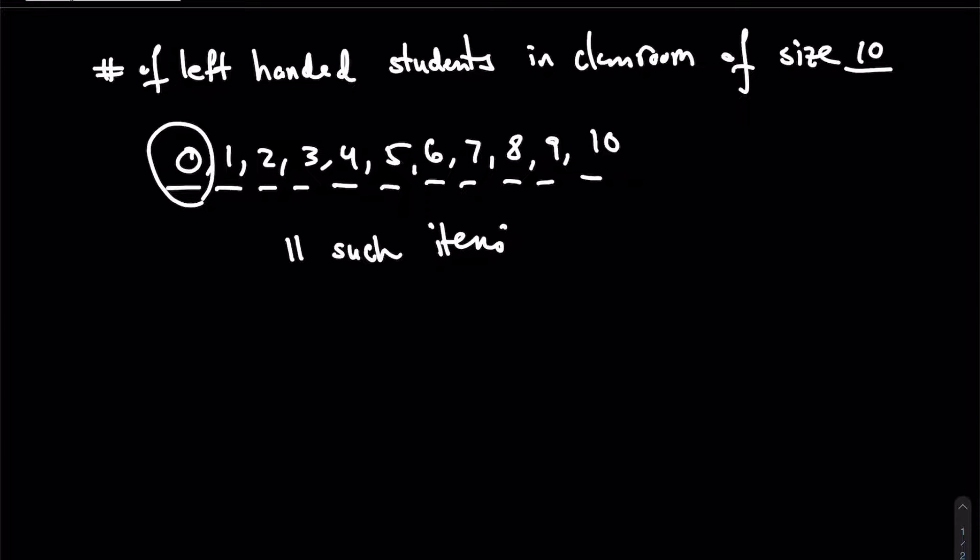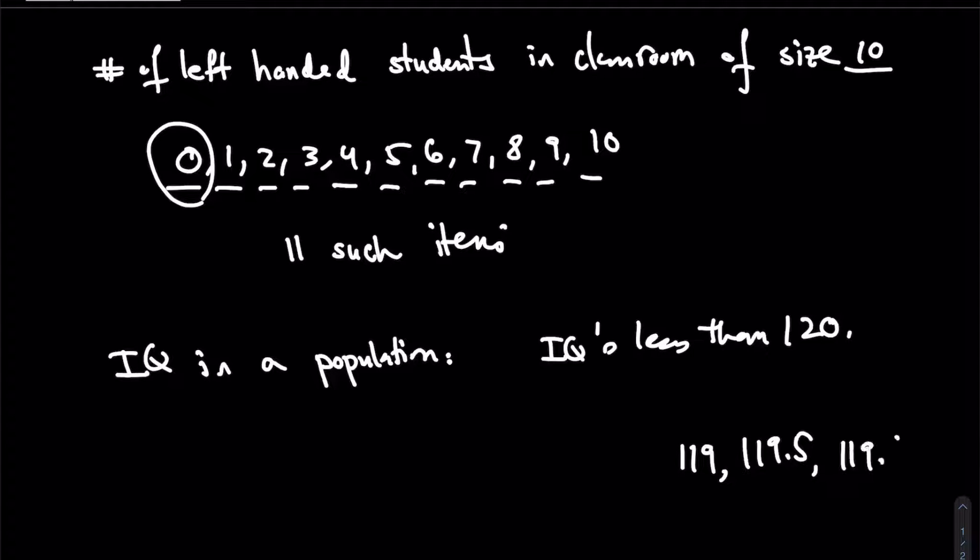Now, but if I said my experiment is IQs in a population, and if I want to talk about IQs less than 120, and I turned around and said, why don't you list all the IQs that are less than 120, you wouldn't be able to do it because you can't say 119 because I could say how about 119.5, or I could say 119.8, and I could just continue. So there's like infinitely many outcomes that will be less than 120, so you couldn't do it.